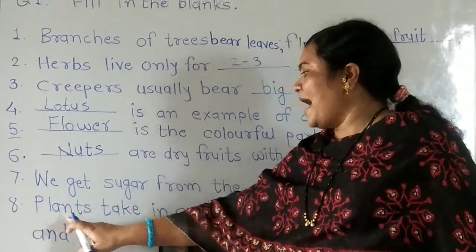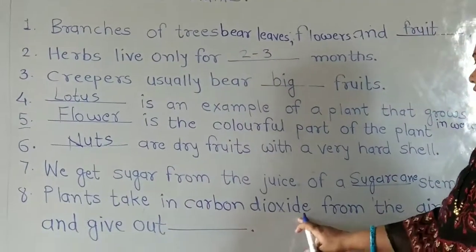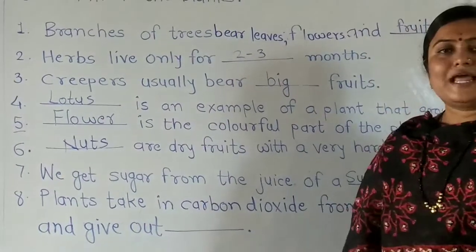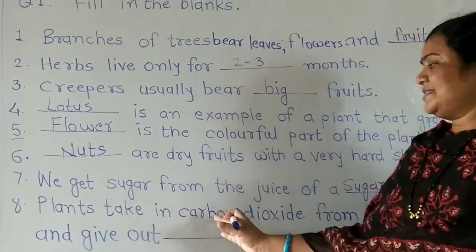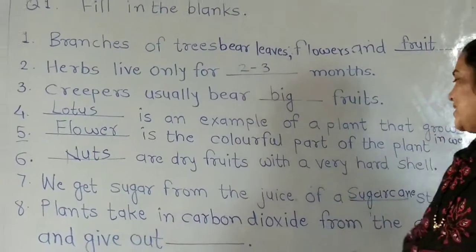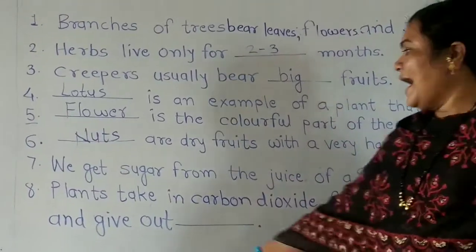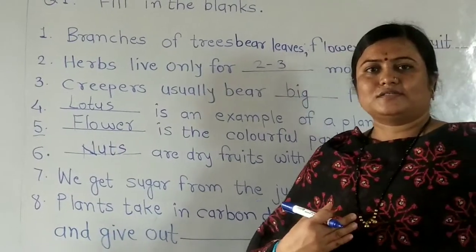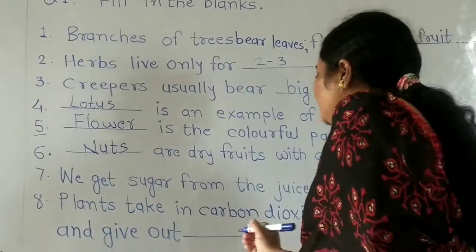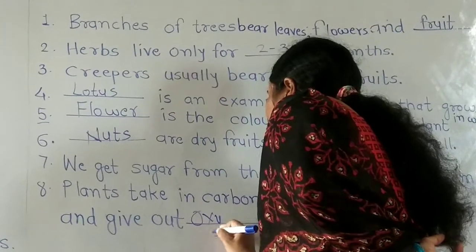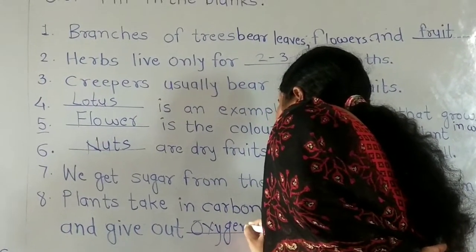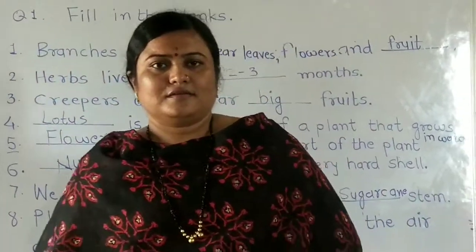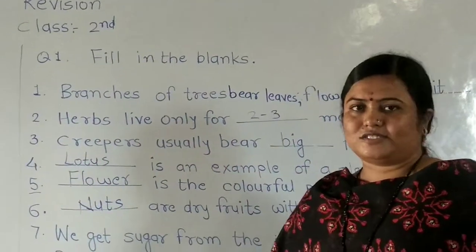Number 8: Plants take in carbon dioxide from the air and give out which gas? The answer is oxygen. Plants take in carbon dioxide from the air and give out oxygen.